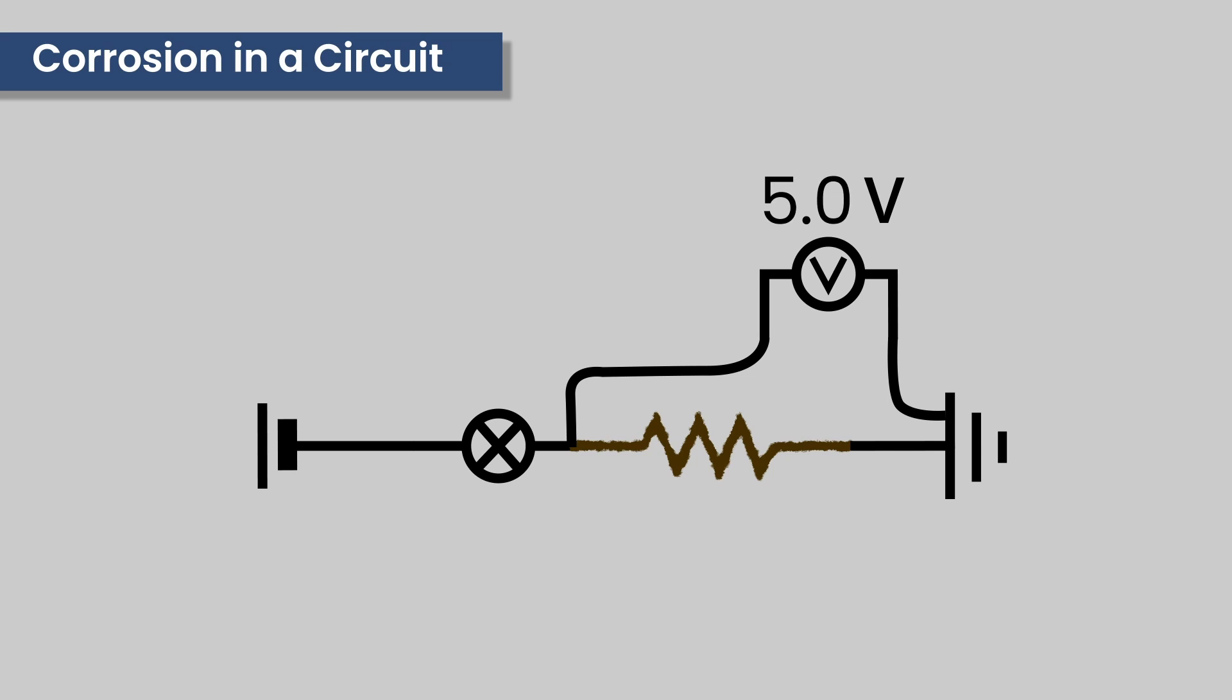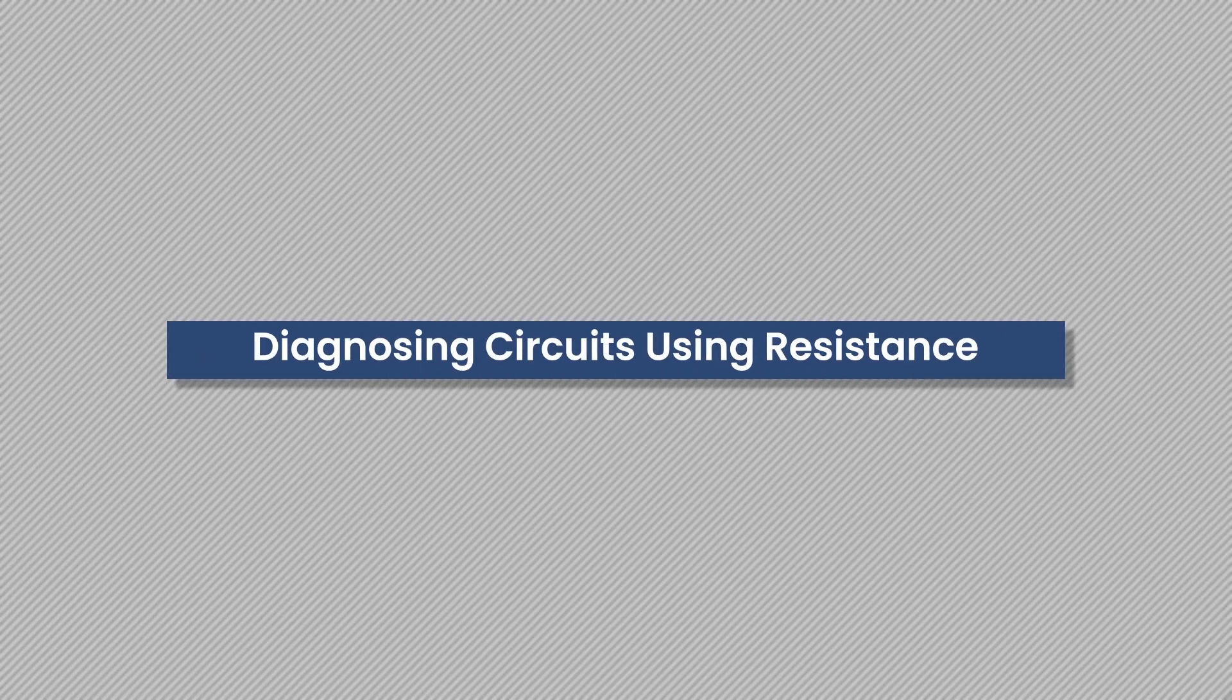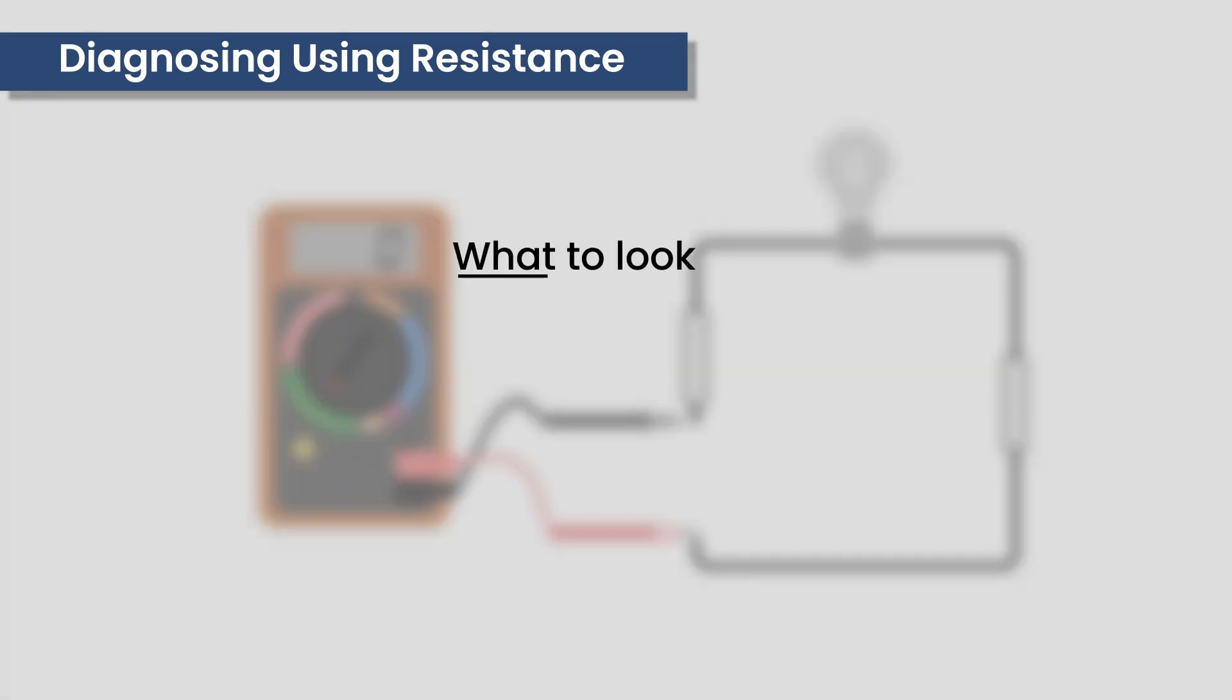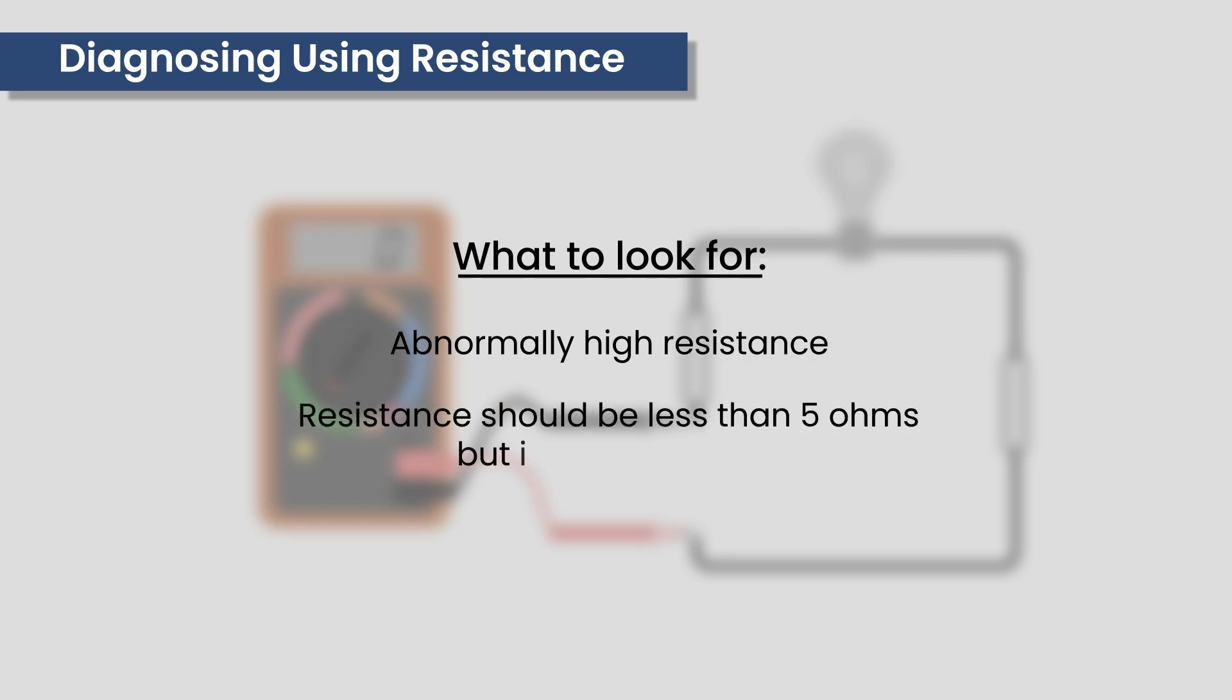If the unwanted resistance is high, the voltage will be low. Diagnosing circuits using resistance: place the probes on either ends of the wire. When diagnosing, what you are looking for is an abnormally high resistance in the circuit. The total resistance in the circuit should be less than 5 ohms, but ideally zero.